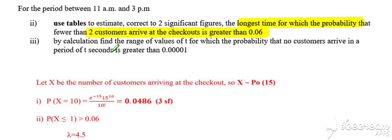If we look at the solution, we essentially want fewer than two customers, so that's X is less than or equal to one. The probability of that needs to be greater than 0.06, and we need the lambda value that corresponds to that probability statement. We can use our tables or you can use your calculator and the inverse function on your calculator to work out your lambda value that corresponds to that probability statement. In this case, by doing that, we get a lambda value of 4.5.